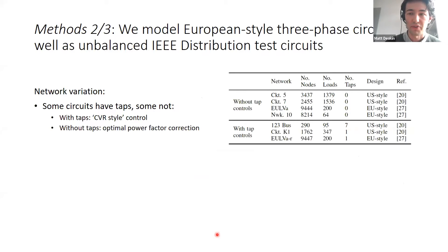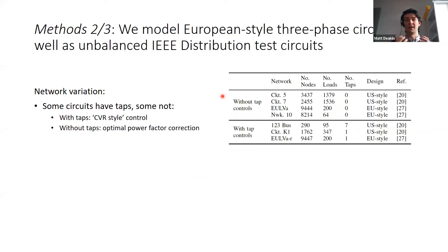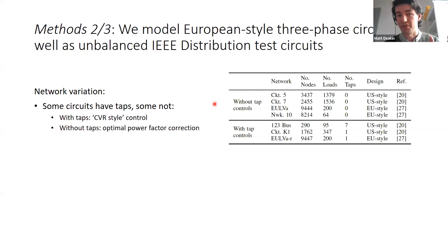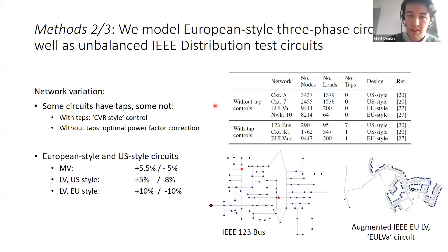We look at two different types of network variation. First, we look at networks without taps and some with taps. If you have taps, you can do the CVR thing properly — normal CVR puts a capacitor bank in, steps the voltage down, and demands across the whole circuit are reduced. If you have tap controls, you can do that with your inverters: inject a small amount of reactive power on buses at the edge so you can step the tap down. Without tap controls, you have this trade-off between losses increasing and load demand decreasing.